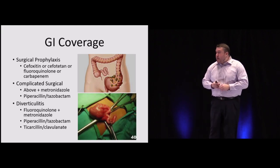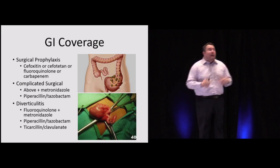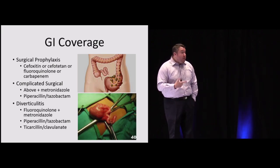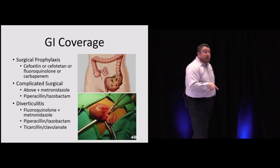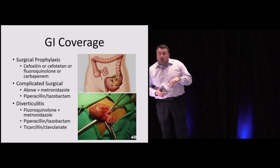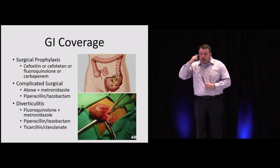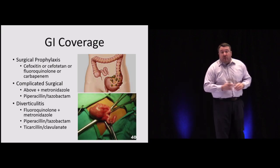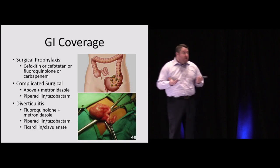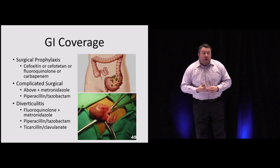For GI prophylaxis, cefoxitin or cefotetan covers normal GI flora well — appropriate for suspected appendicitis. Carbapenems and piperacillin-tazobactam also provide good GI coverage. For complicated cases with peritonitis or systemic involvement, add metronidazole to cover anaerobes, which thrive in the oxygen-poor GI and GU environments. For diverticulitis, there's debate about antibiotic necessity, but most still recommend treatment covering anaerobes and normal flora — a quinolone plus metronidazole, piperacillin-tazobactam, or amoxicillin-clavulanate are options.